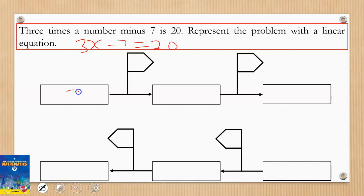So there is a number I don't know, I call it x. Three times the number gives me 3x, minus 7 gives me 3x - 7. That represents the left-hand side of the equation.